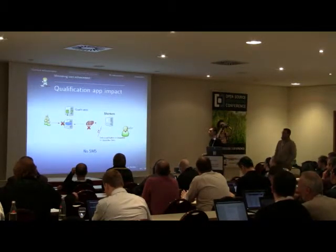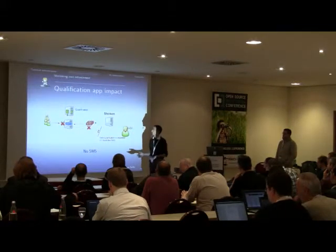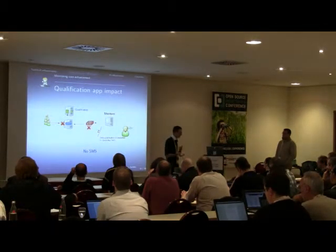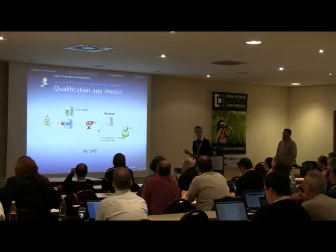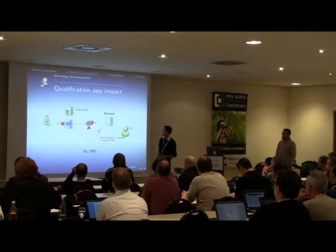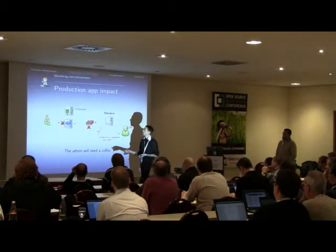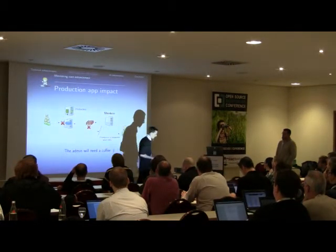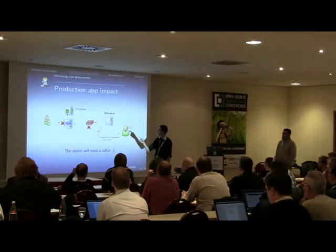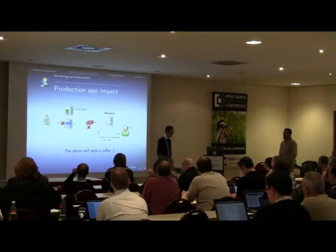Here's the example: it's night, your network administrator is asleep, and one switch has a problem. It impacts the qualification applications. Shinken computes the root problem's business impact — it's a qualification issue, not important, no SMS is sent, your network admin can still sleep. The same switch, but this time the production application is down. Shinken computes the business impact importance of this root problem, determines it's the administrators' problem, the notification goes through the filter, and the SMS is sent.